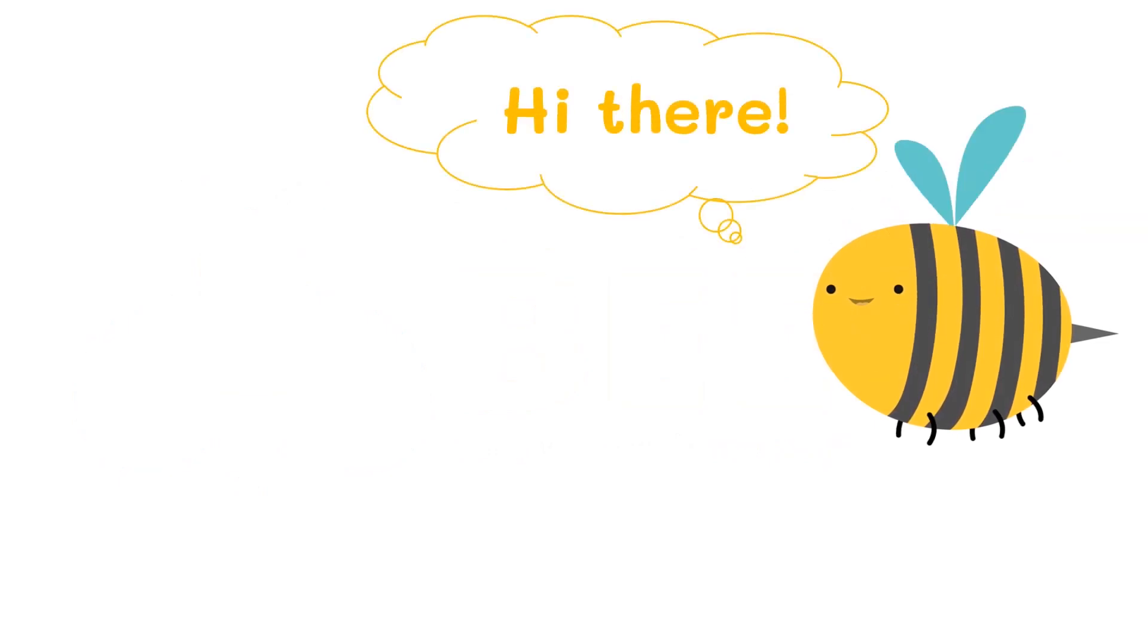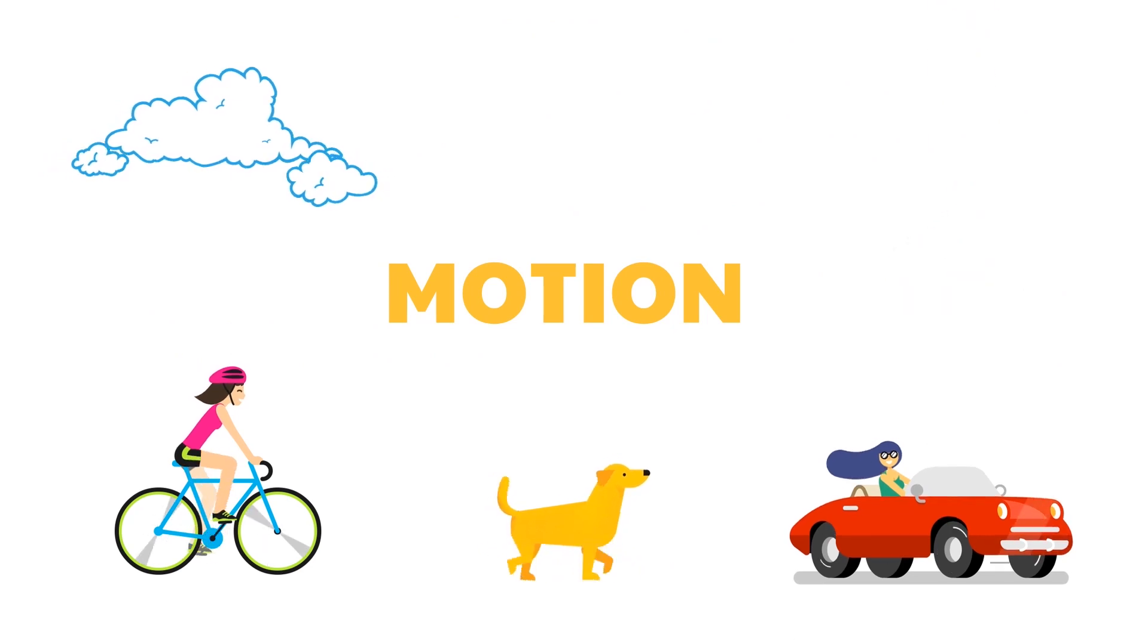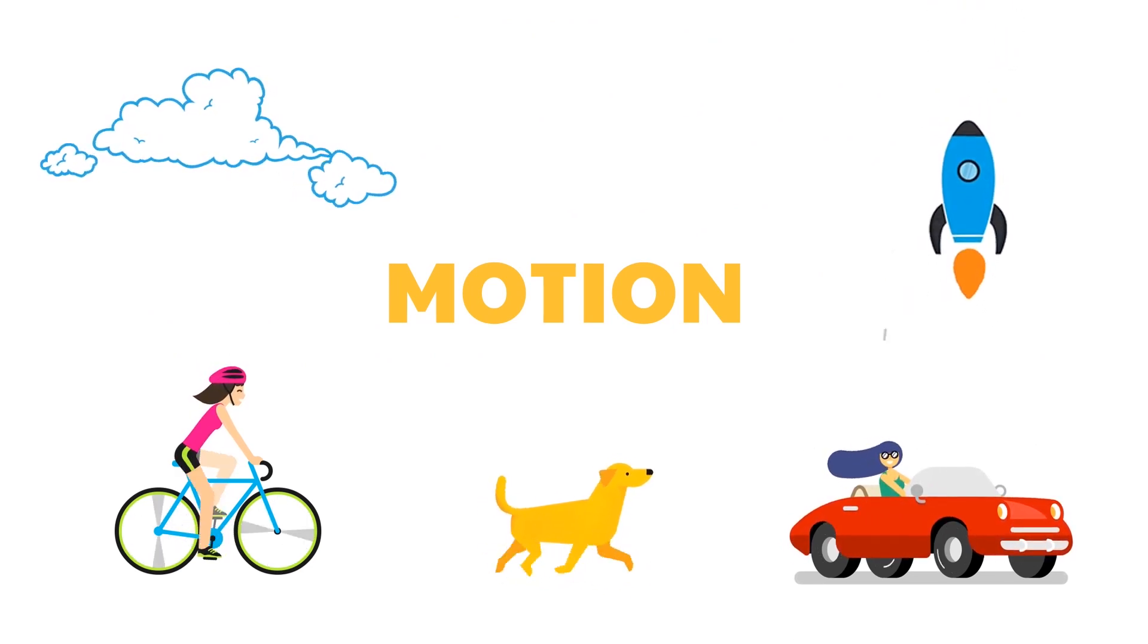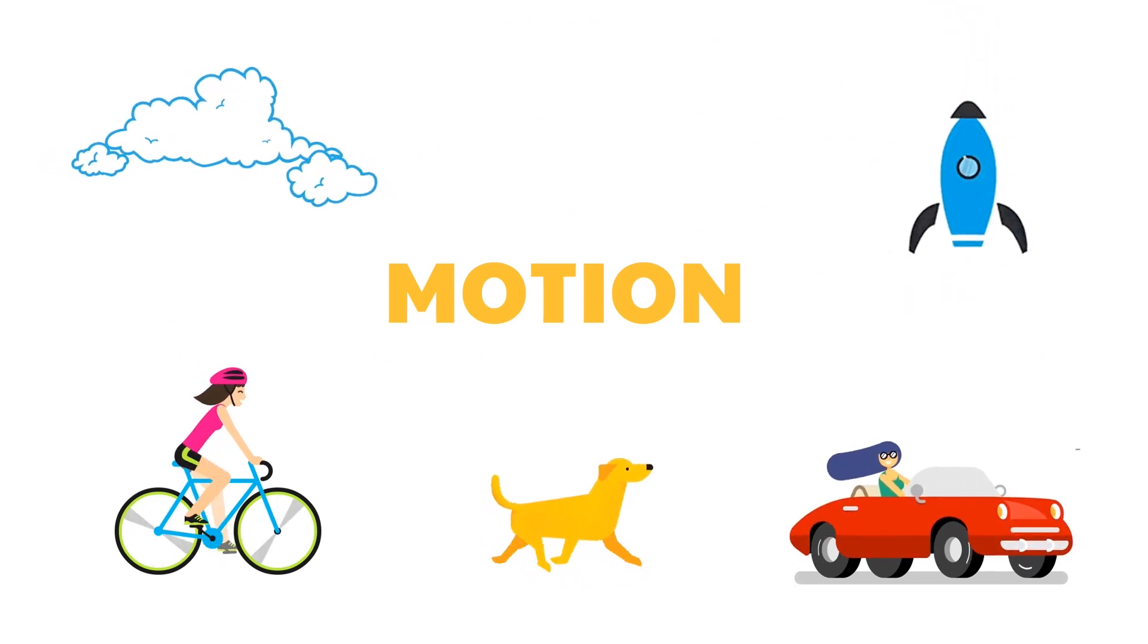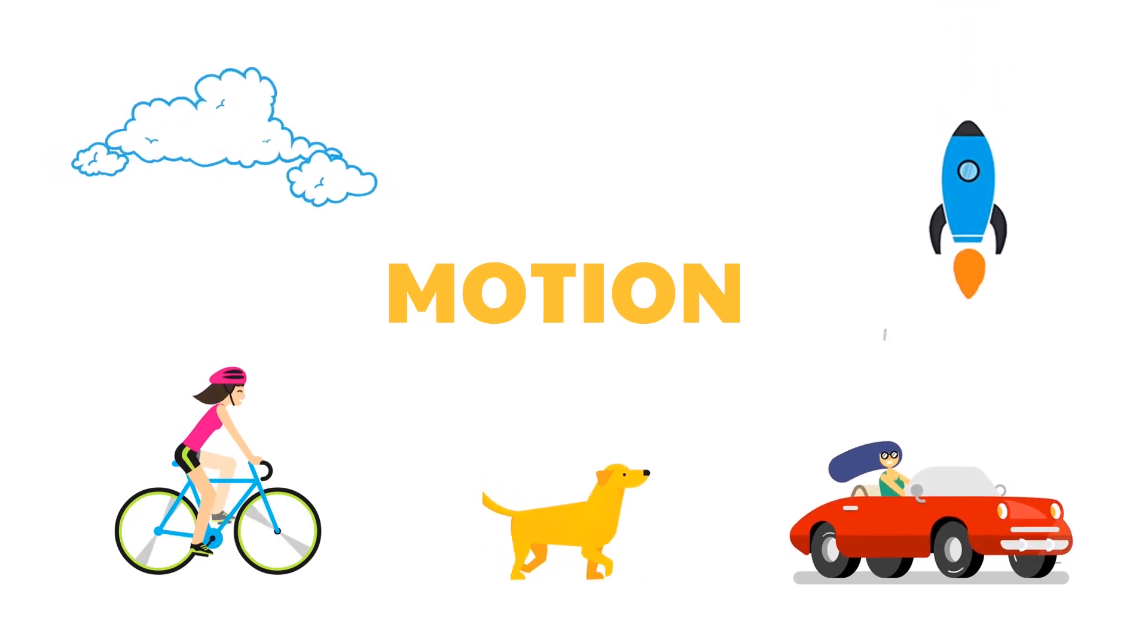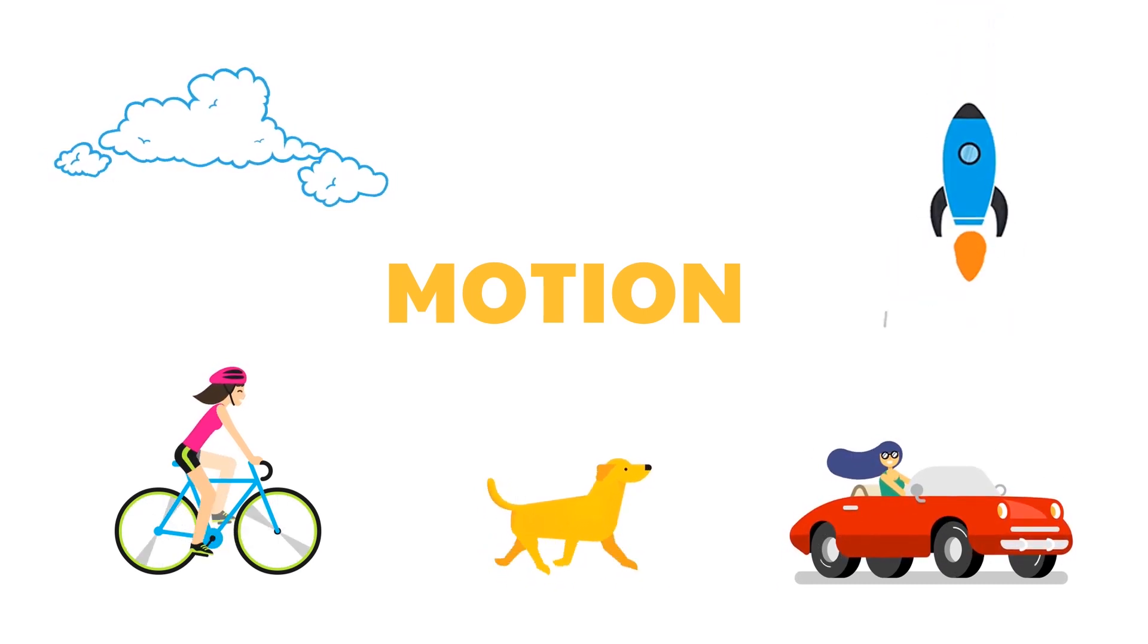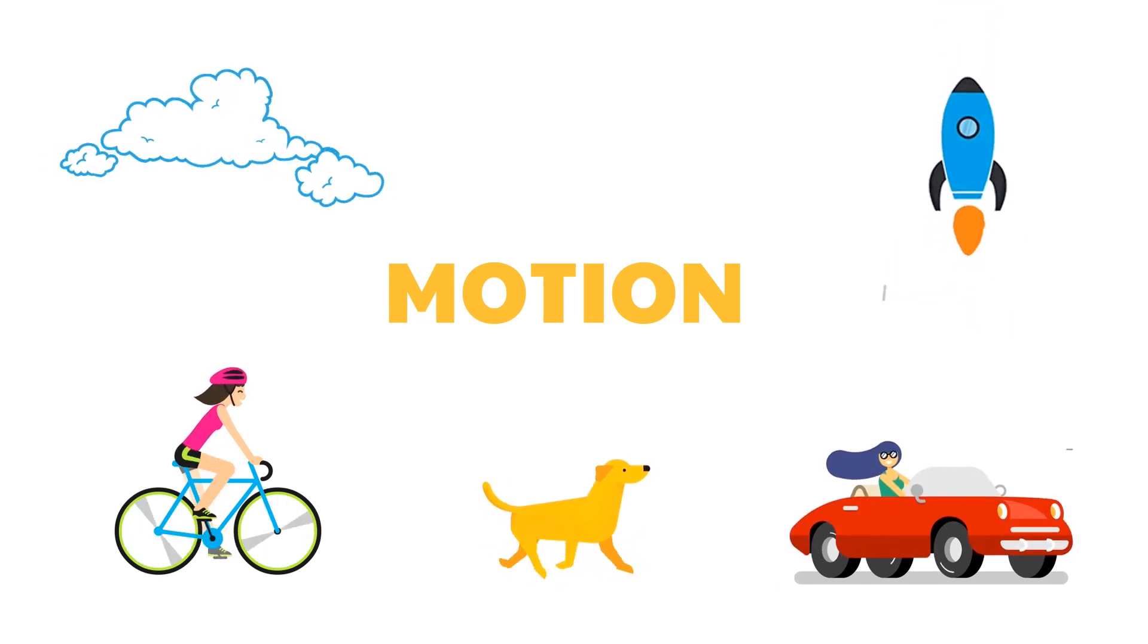Hi there, in this video we will be describing motion in terms of distance or displacement, speed or velocity, and acceleration. So let's get started. Many of the things around us move. Some move slowly like turtles and clouds, while others move much more quickly like rockets and satellites.